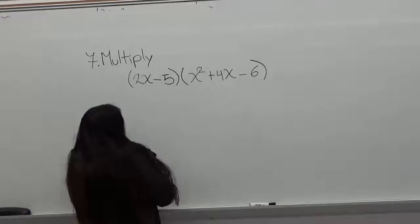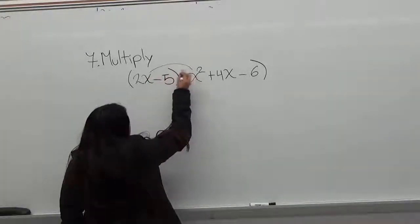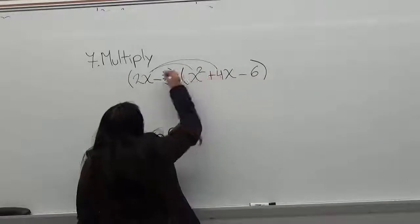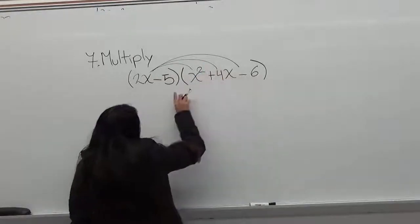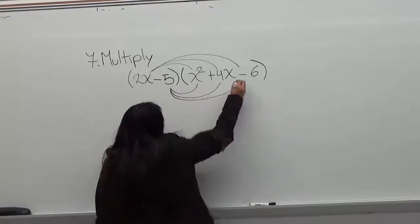So first to multiply two parentheses, you have to multiply this by this, this by this, and this by this. And the second one to each one too. So this by this and this by this.